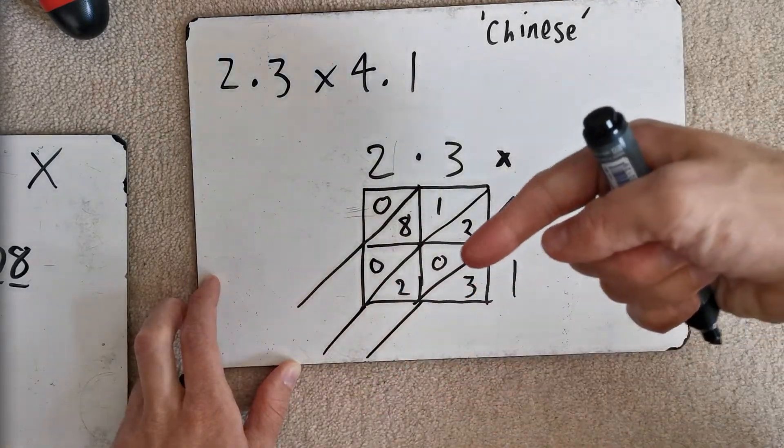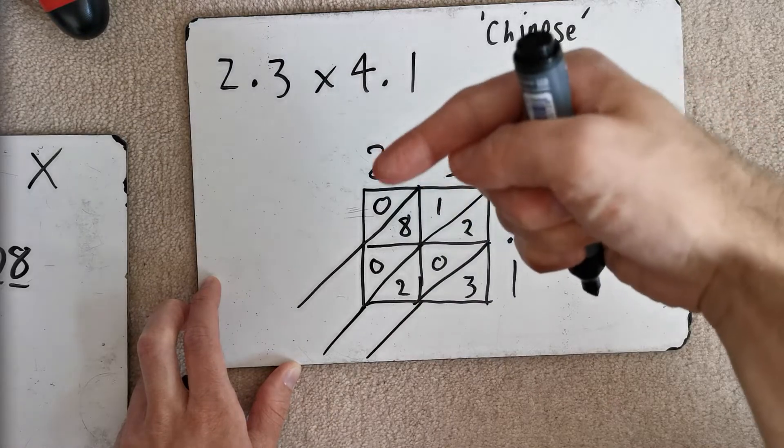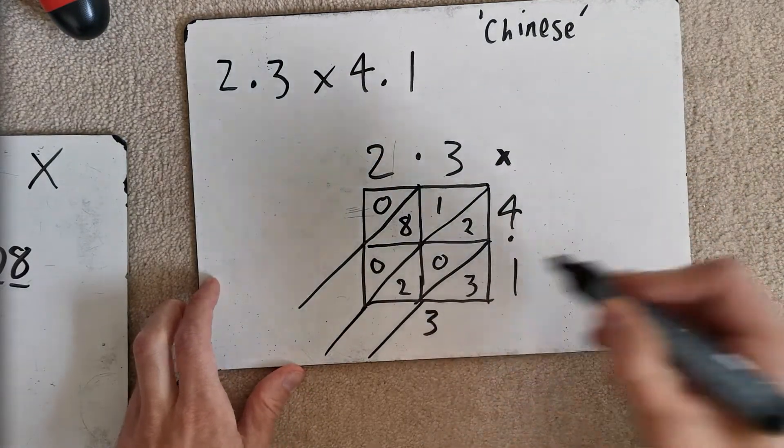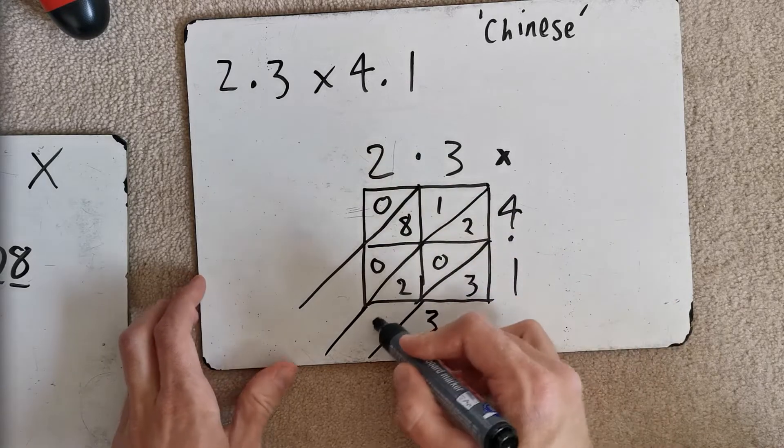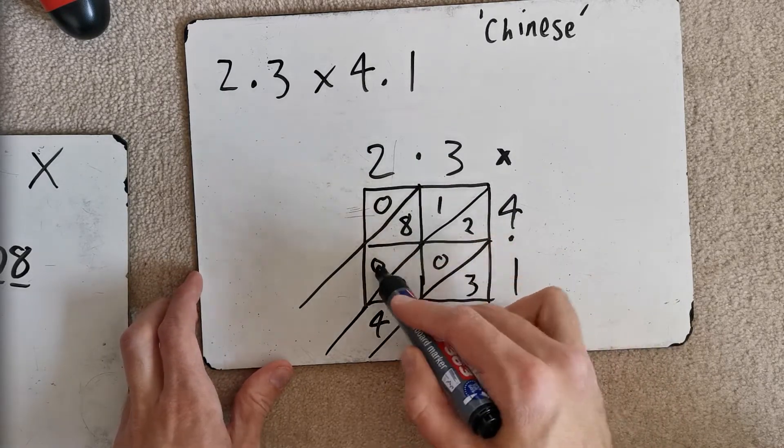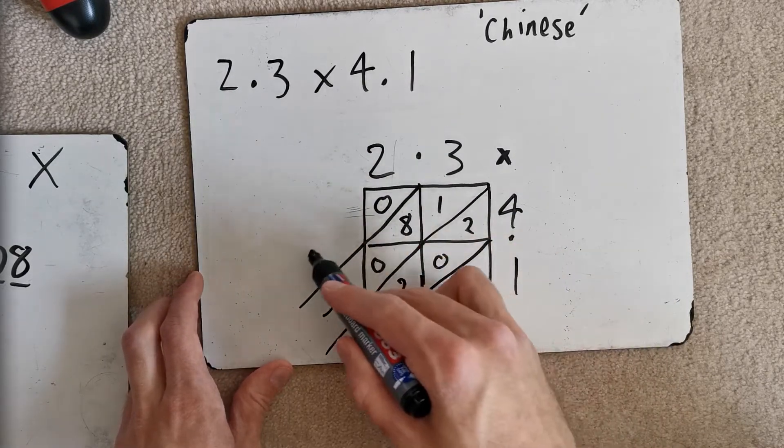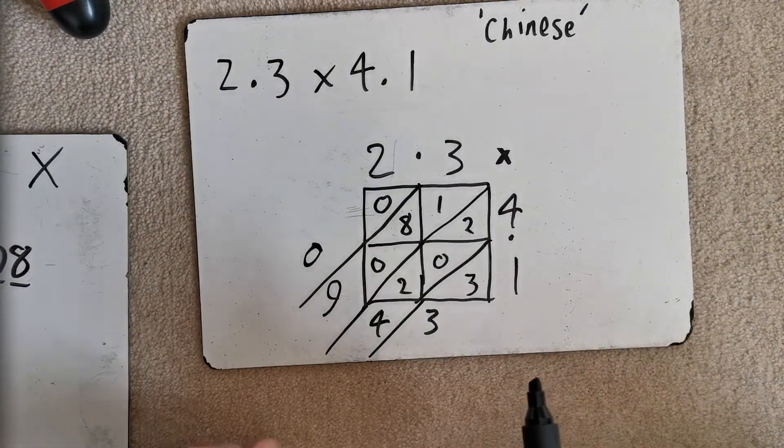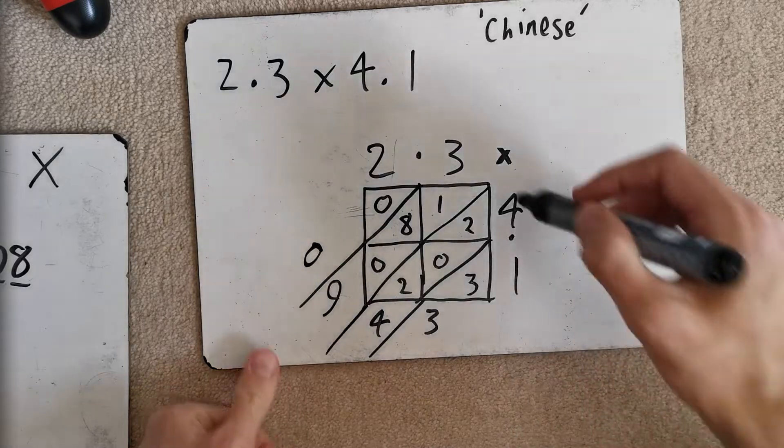And then, we add things up down the diagonals. Okay? Right. 3 and nothing is 3. 2 and 0 and 2 is 4. 1 and 8 and 0 is 9. 0, well, we can put a 0 there. We don't necessarily need to. Now, this is where the decimals come in. Okay?